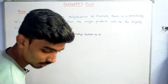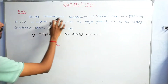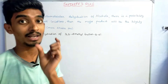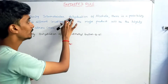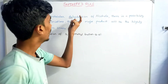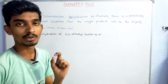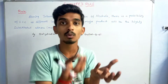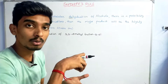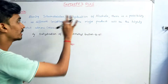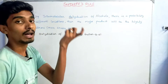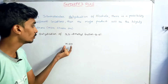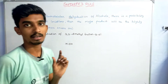First, in Saytzeff's Rule — during intermolecular dehydration, what is meant by intermolecular dehydration? Dehydration is an elimination reaction. 'De' means removal, 'hydration' means water, so removal of a water molecule is known as dehydration. In intermolecular dehydration, a water molecule between molecules is removed. For example, if there is an alcohol, the OH and H2O are removed — this is called intermolecular dehydration.